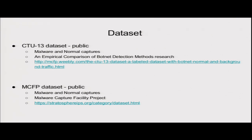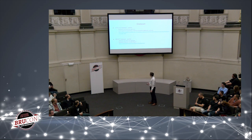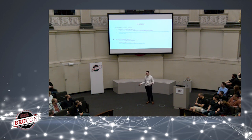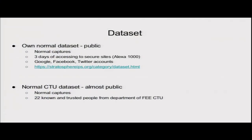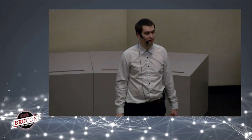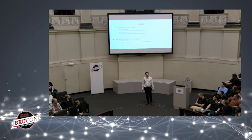The second dataset is the MCVP dataset — also public, containing malware and normal captures — generated by the Malware Capture Facility Project. At that point we had almost enough malware data but not enough normal captures, so we had to generate our own normal dataset. That meant three days of clicking websites: accessing the top 1,000 Alexa websites and creating accounts on Google, Facebook, and Twitter and interacting with them.